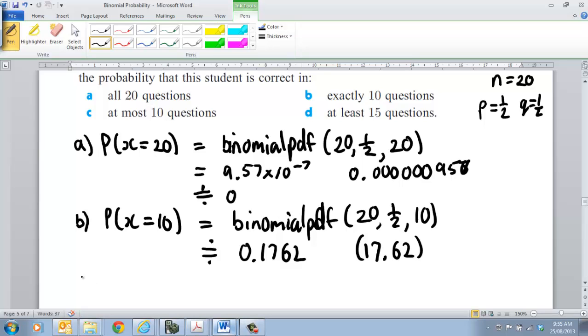Part C: at most 10 questions. So probability that X is less than or equal to 10. Now this is where we use our binomial CDF. That's going to be 20, still got a half, and I'm going to put 10 in there.